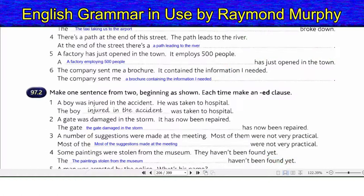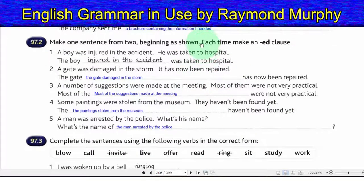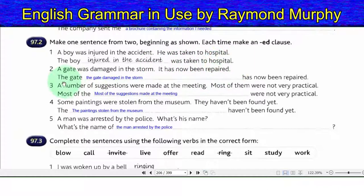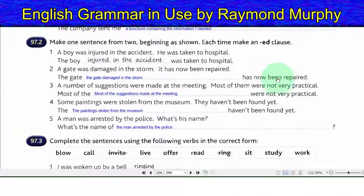97.2. Make one sentence from two, beginning as shown. Each time make an -ed clause. One: a boy was injured in the accident — he was taken to hospital. Answer: the boy injured in the accident was taken to hospital. Two: a gate was damaged in the storm — it has now been repaired. Answer: the gate damaged in the storm has now been repaired.